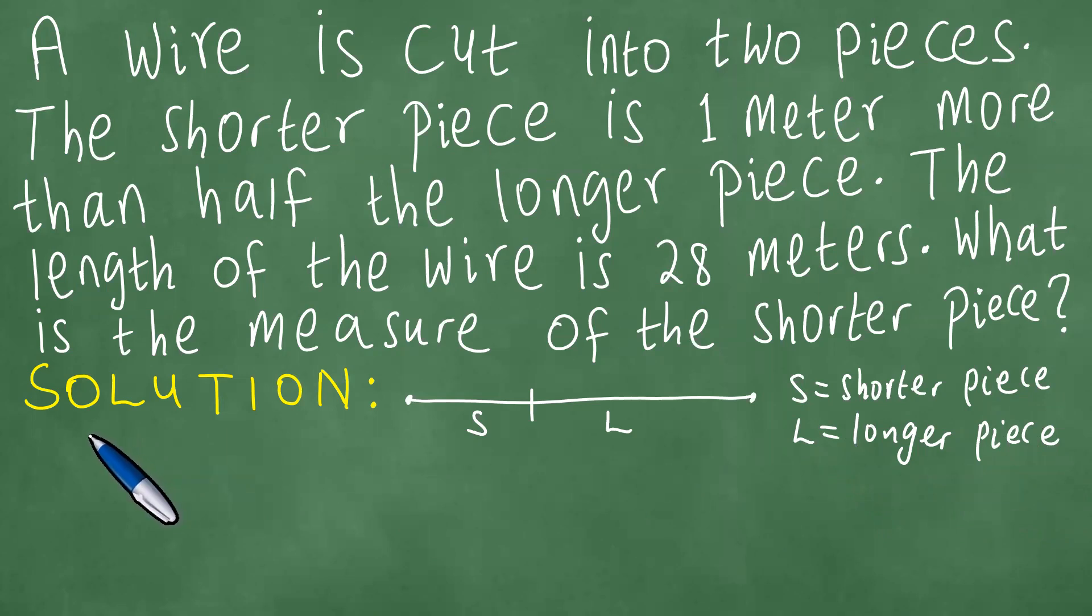So, with this S now, the shorter piece is one meter more than half the longer piece. In other words, we are comparing the shorter piece with half the longer piece. But if the shorter piece is one meter more, it means the half the longer piece is one meter less, so that if we add the one like this, then they are going to be equal to each other.